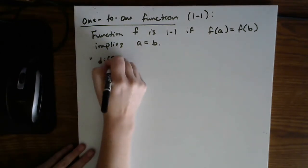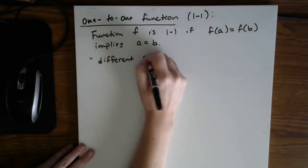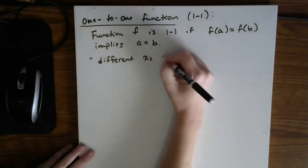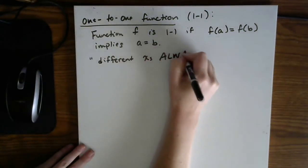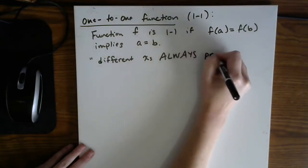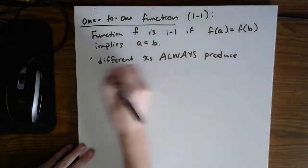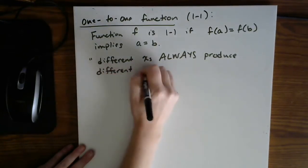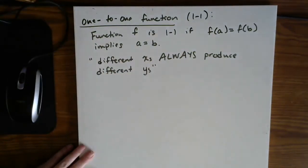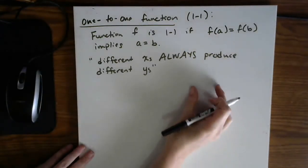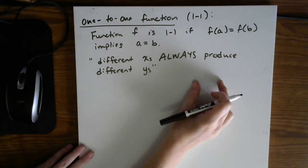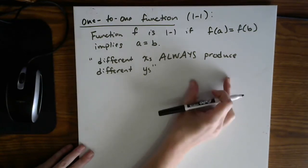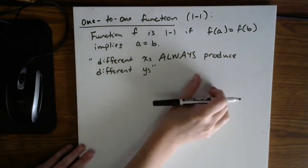different input values, so maybe we'll call them x's, always produce different y's or output. So if I have two different x values along the horizontal, they cannot share the same y value. They must be offset.